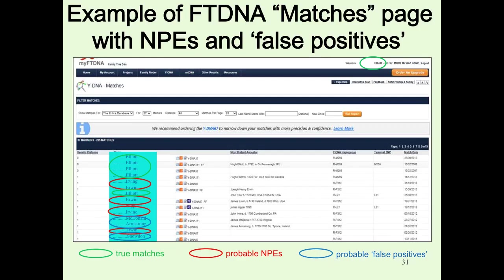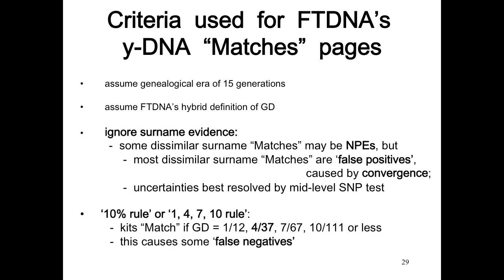For the FTDNA matches page, they assume 15 generations — some surnames go back further than that. They assume a hybrid definition of genetic distance, and they ignore the surname evidence. For 37 markers, everything with a genetic distance of less than four is listed as a match. But that's problematic — some with dissimilar surnames are NPEs, and most with similar surnames will be false positives caused by convergence. The four-by-37 cutoff is an arbitrary limit.